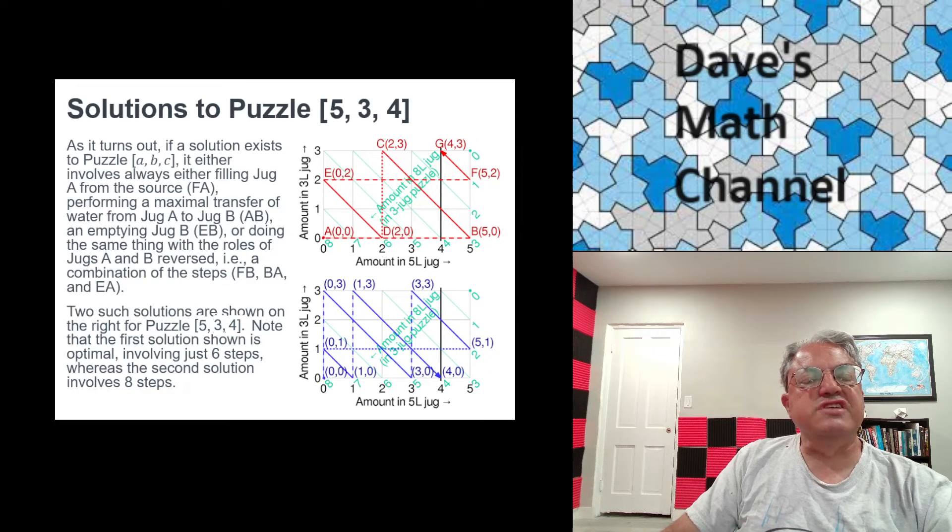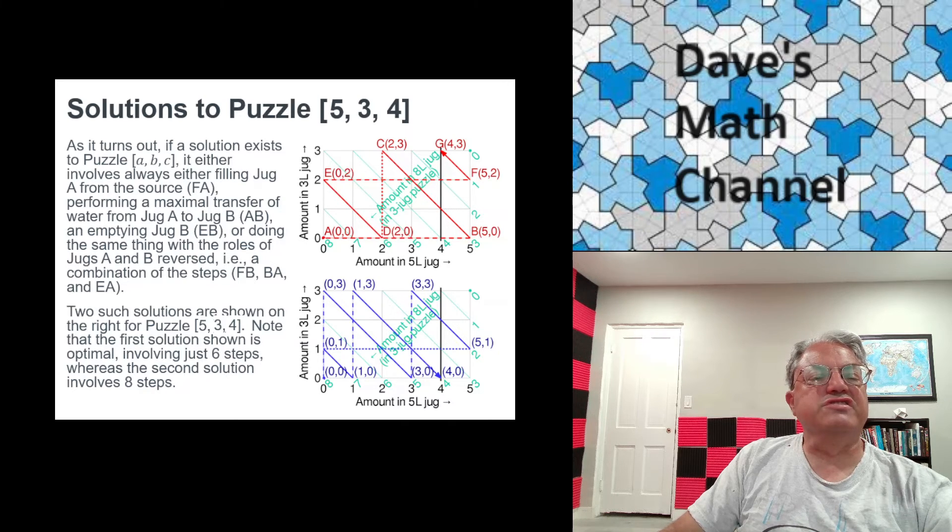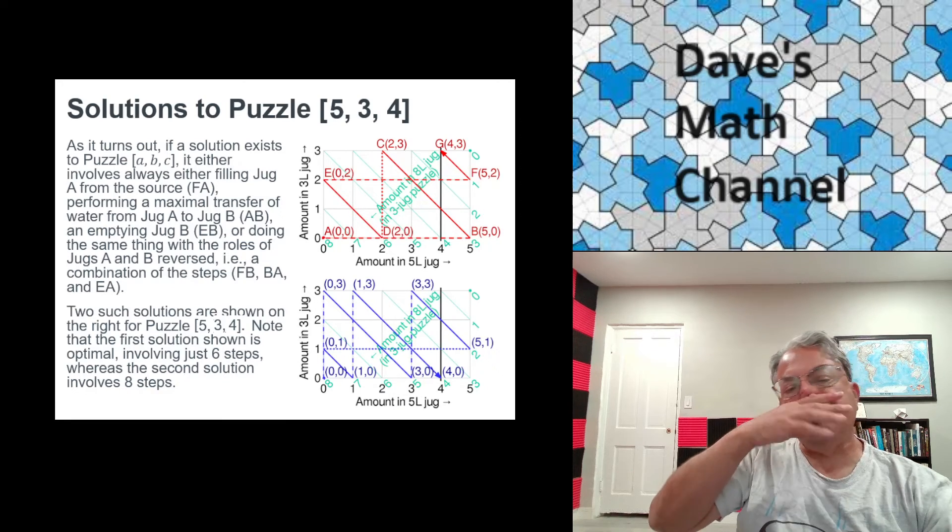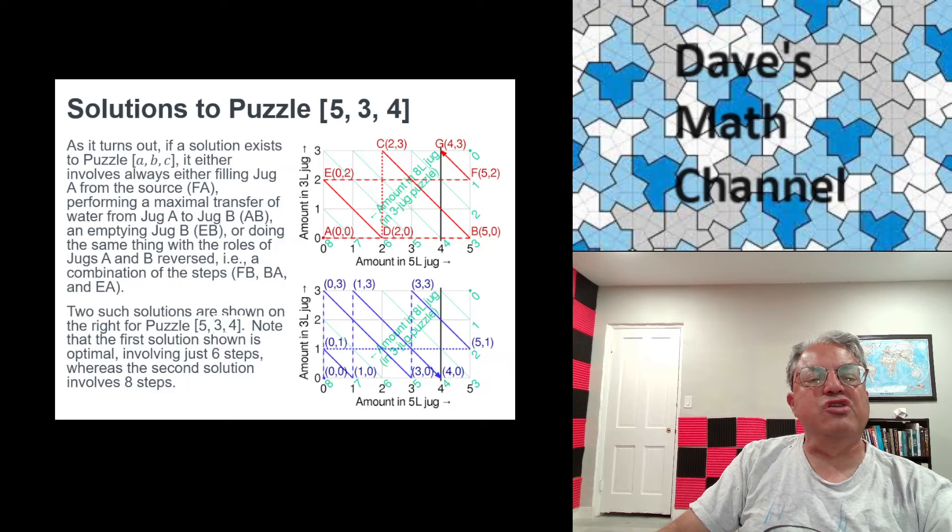But there's another solution. It's not optimal. This one involves eight steps. If you look at the directed graph on the bottom, this blue graph, we're kind of doing things the same way. I'm not going to go through every step here. The only difference is notice that in the top solution given by the red digraph, we started by filling the big jug, the five-gallon jug. And in the other solution, we start by filling the small jug, the three-gallon jug. And the other thing you should notice here, in the top solution, we're always going from jug A to jug B. We never transferred from jug B to jug A. We always transferred from jug A to jug B. And we always fill jug A and empty jug B.